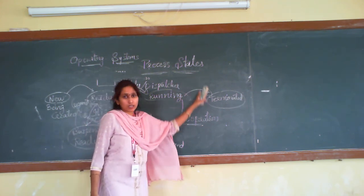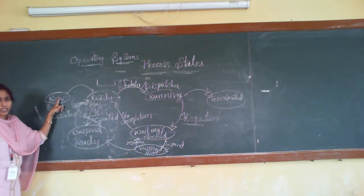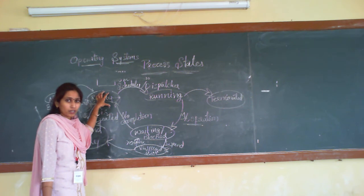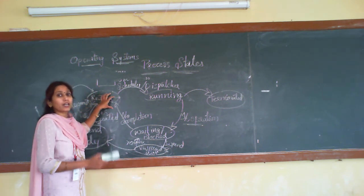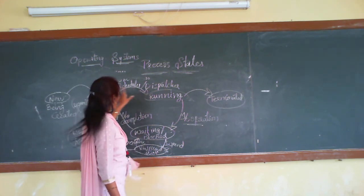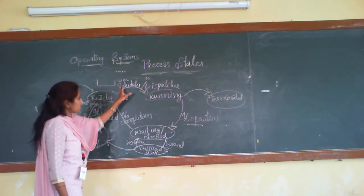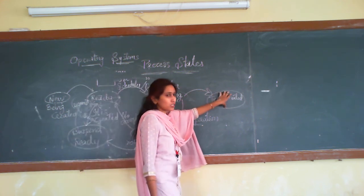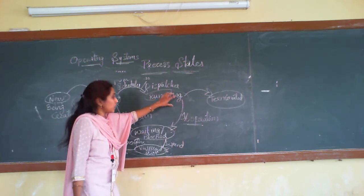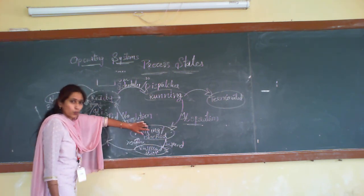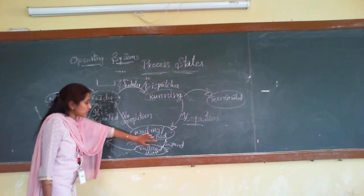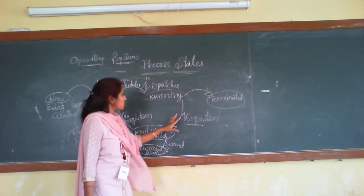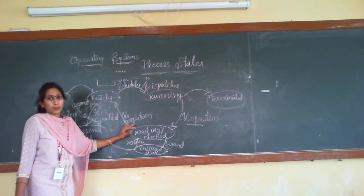This is all about the process states. To summarize: new state — the process is being created; ready state — it is ready for execution; running state — the dispatcher dispatches the process to the CPU for execution. If executed properly, the process is terminated. If in use with I/O operations, it goes to waiting or blocked state, and once that operation finishes, it moves back to the ready state. Thank you.